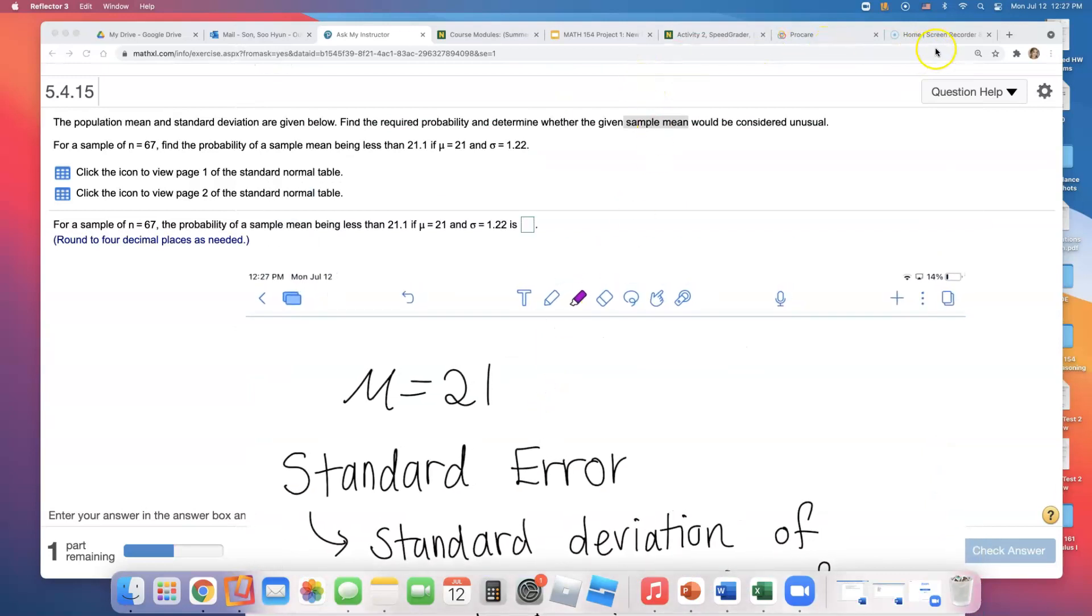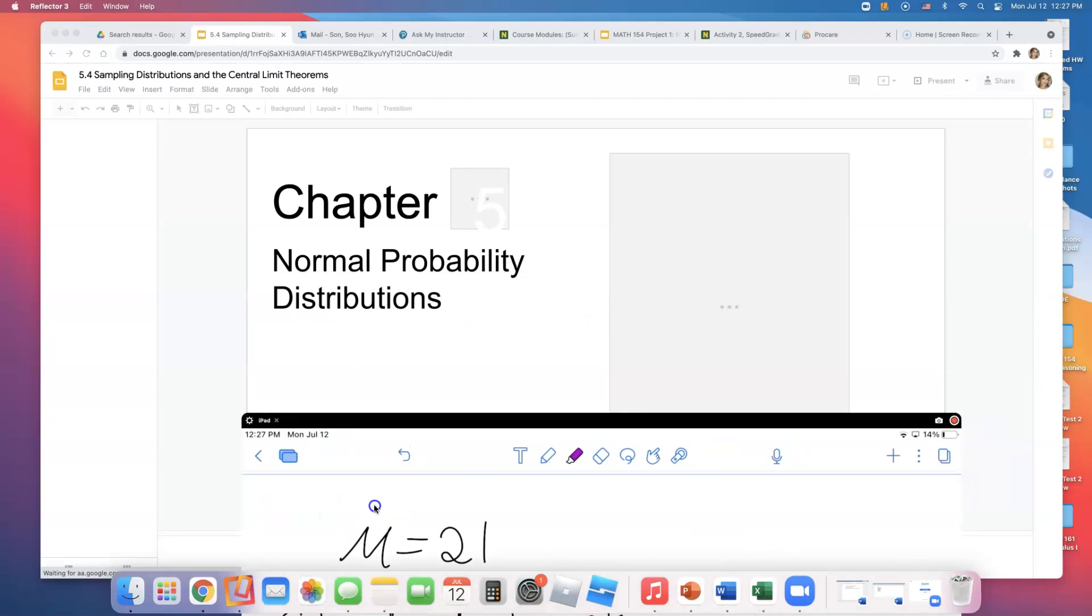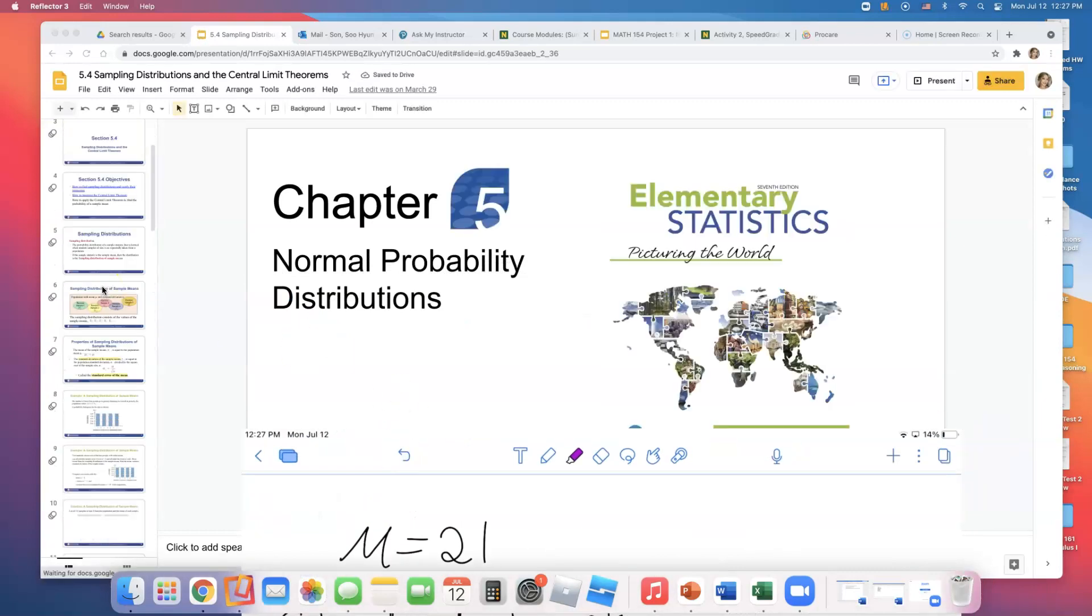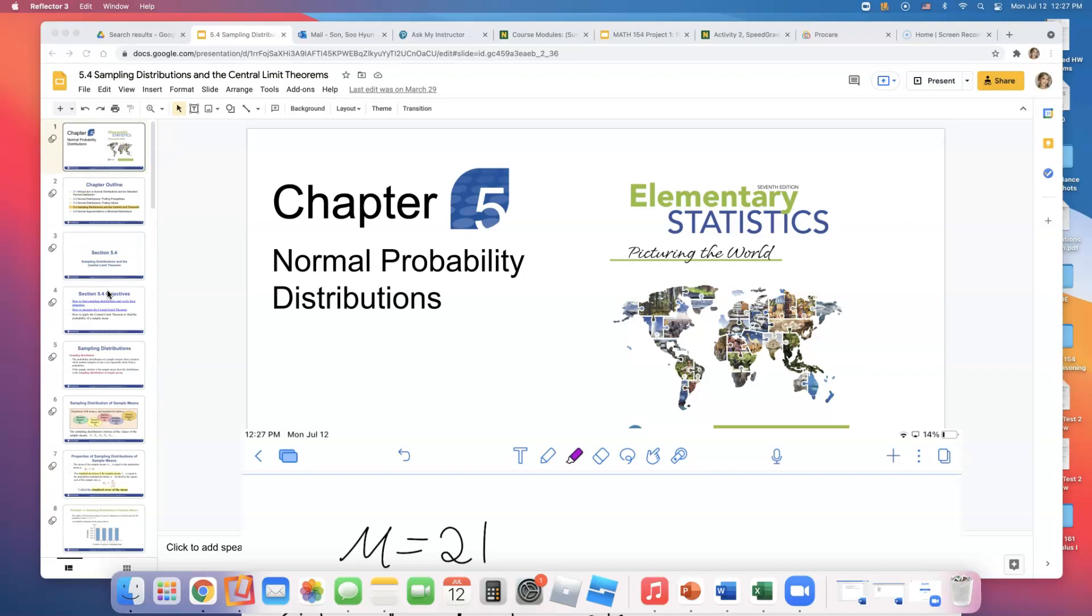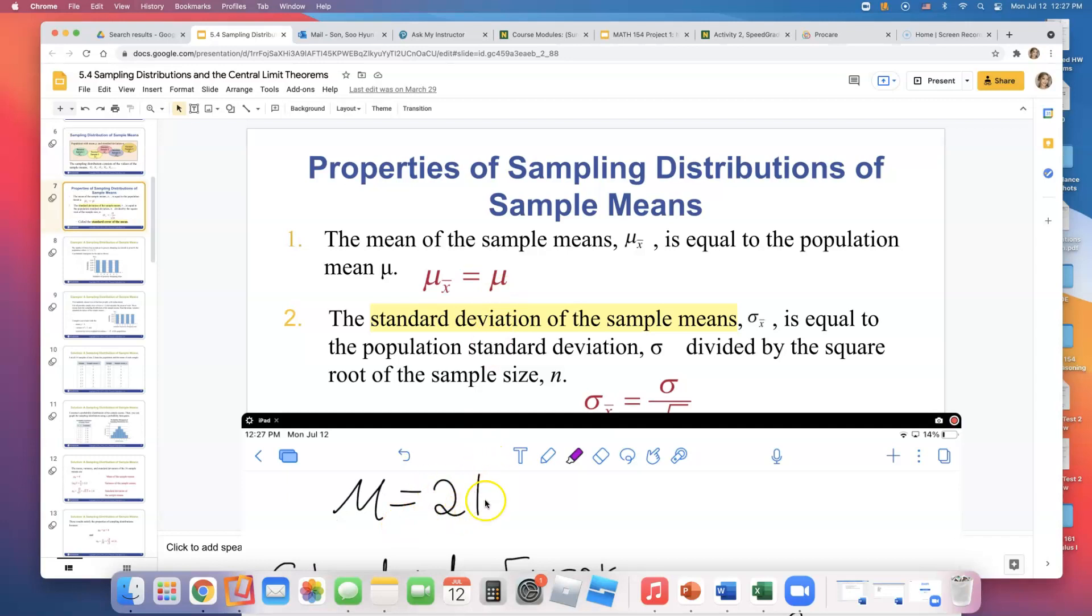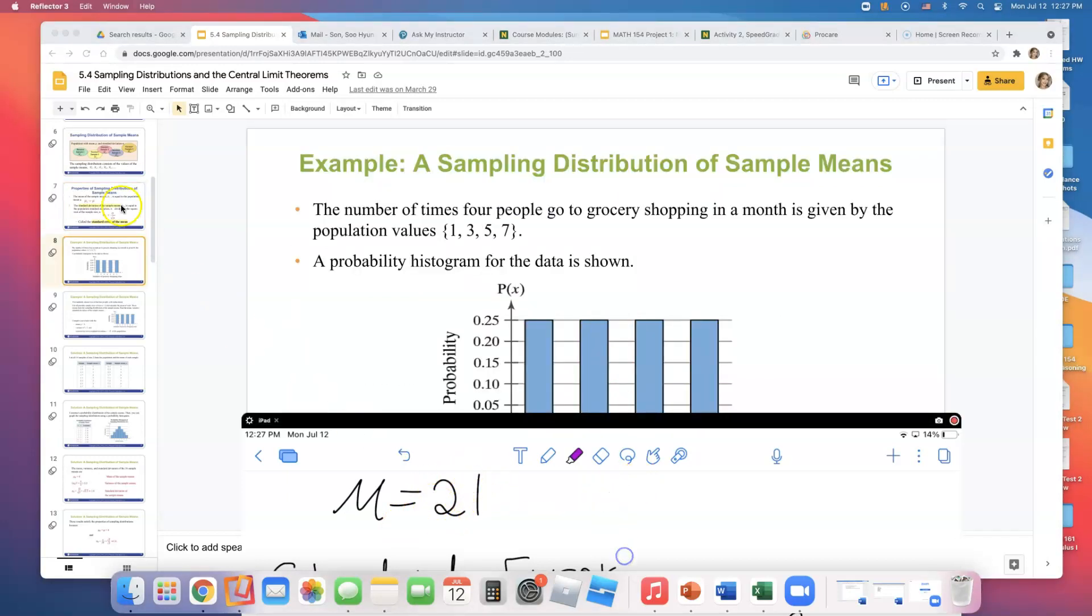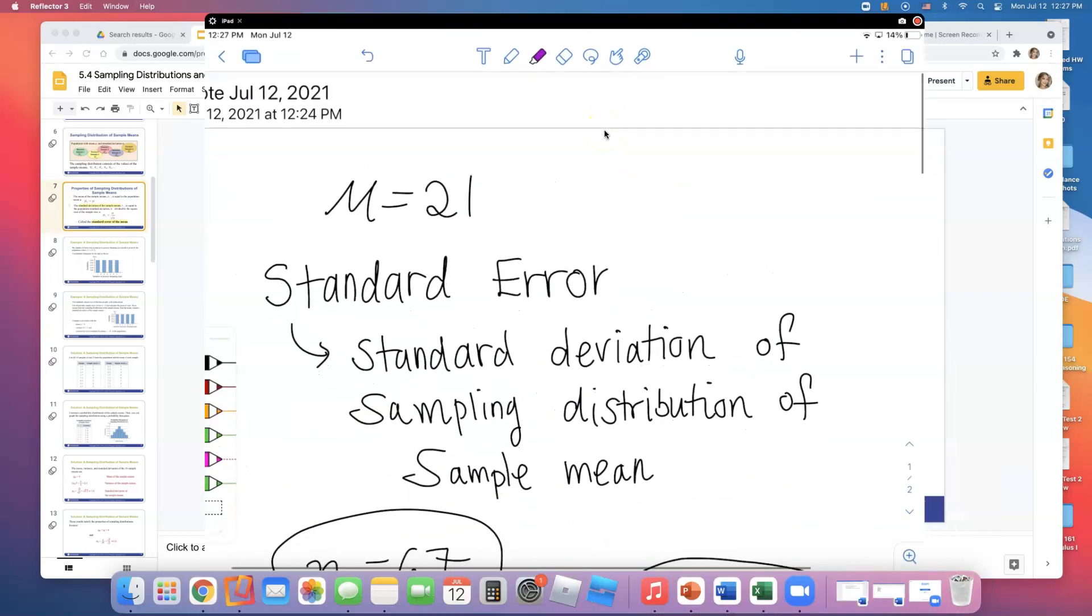This is different from just picking one person - it's about how samples vary from one to another. The mean of the sample means equals the population mean, so mu is 21. But the standard deviation of the sample means, which we call the standard error of the mean, is population standard deviation divided by square root of the sample size. That's the formula you have to remember.